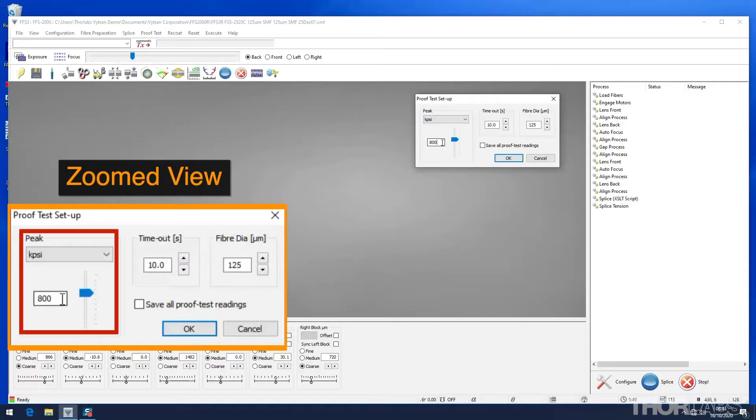The peak value is the maximum load that will be applied to the fibre. If the proof tester is being used to determine if the splice fulfils a minimum strength requirement, that value should be used. If however the breaking strength of the fibre is being measured, a value in excess of the expected maximum strength of the splice should be used instead.